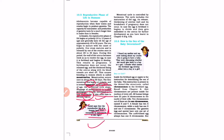The menstrual cycle is controlled by hormones. The cycle includes the maturation of the egg, its release, the thickening of the uterine wall, and its breakdown if pregnancy does not occur.